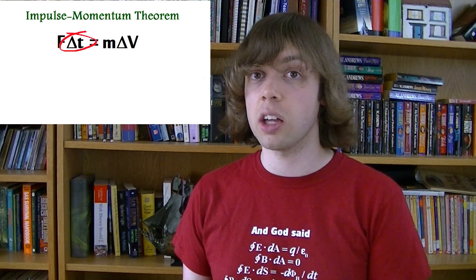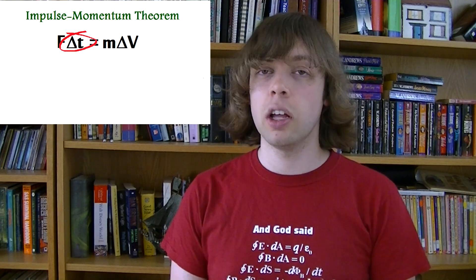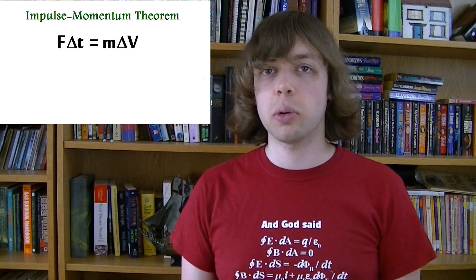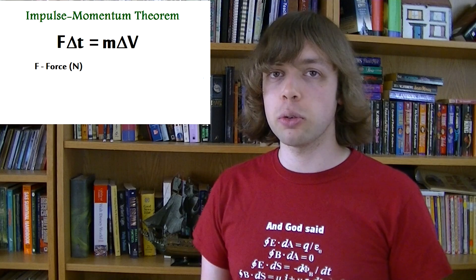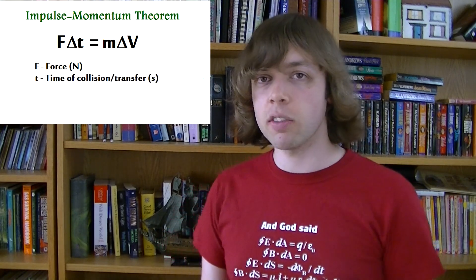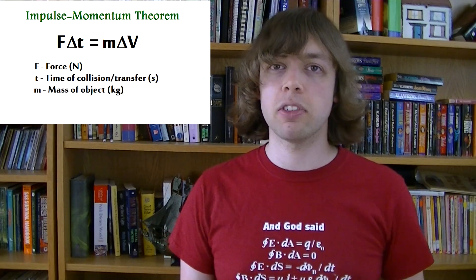So that's change in velocity. And that's change in time, which is basically just a period of time. Time is always moving, time is always changing. So in this equation, F is the force applied to an object, T is the time period over which that force was applied, M is the mass of the object, and delta V is the change in velocity of the object.